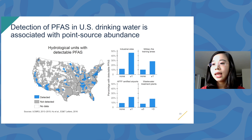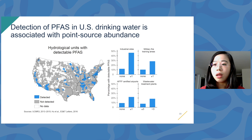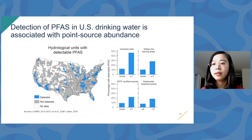Putting the drinking water data on a map also highlights the data gaps we have. The white space on the map shows areas where we don't have good monitoring data, and that accounts for about a third of the U.S. population.